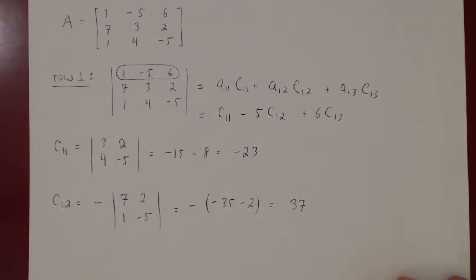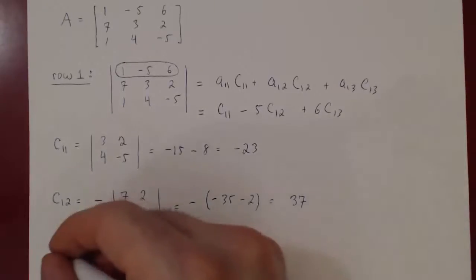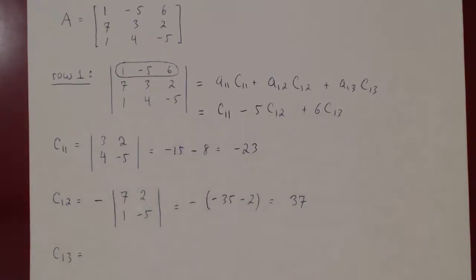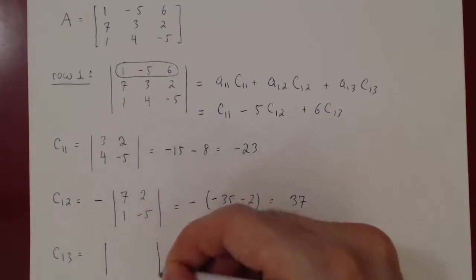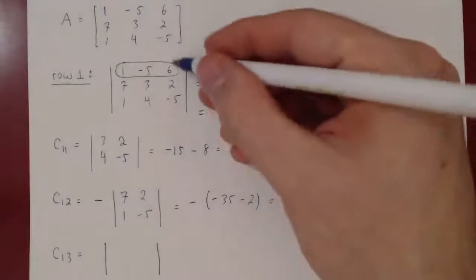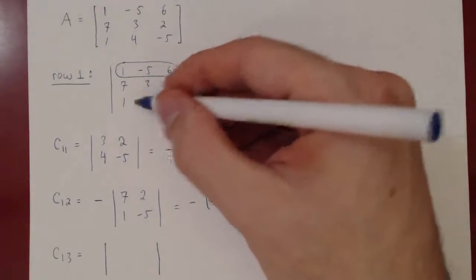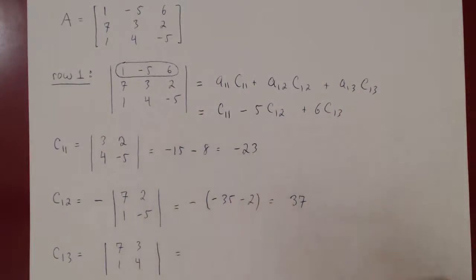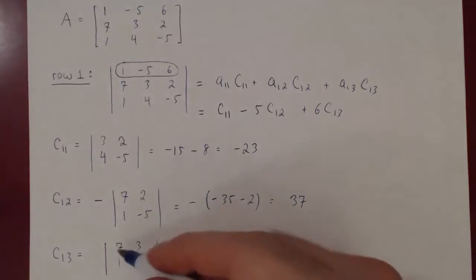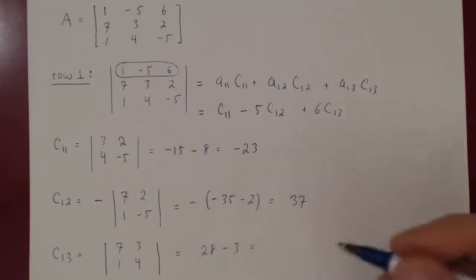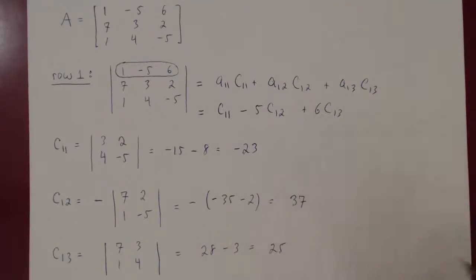C13: 1 plus 3 is 4, which is even, so negative 1 to the 4th is 1. Deleting row 1 and column 3 leaves the matrix (7, 3; 1, 4). The determinant is 7 times 4 minus 1 times 3: 28 minus 3, giving 25. So C13 equals 25.